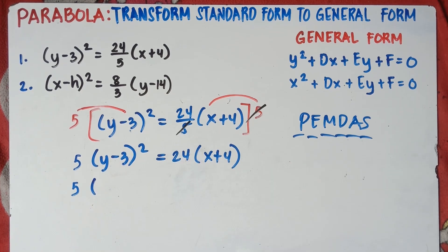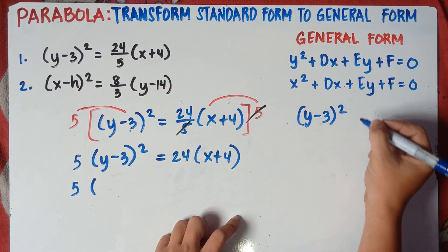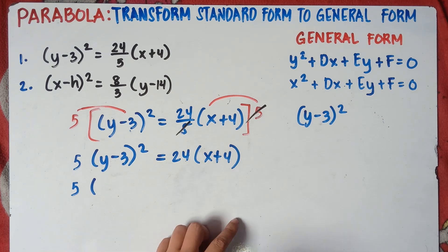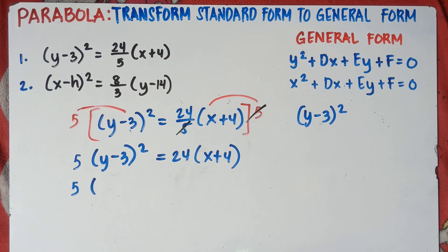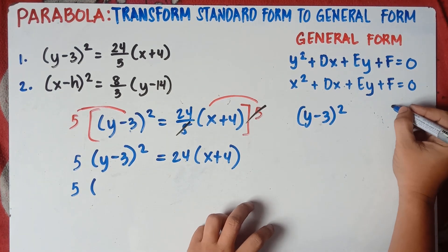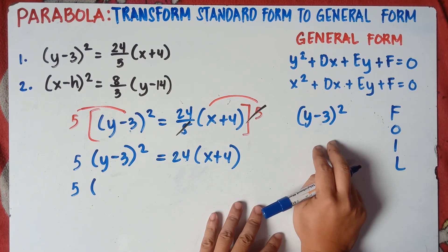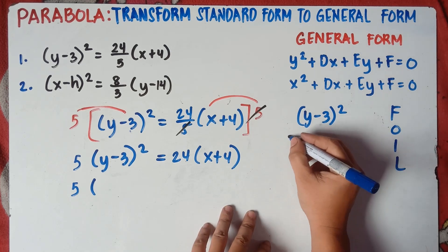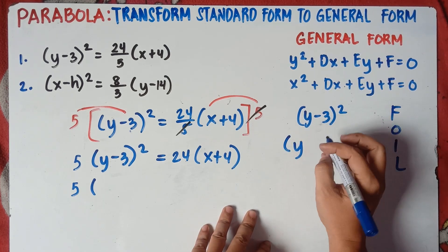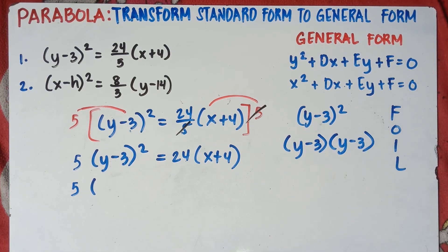So what would be the answer for (y minus 3) quantity squared? You have two options: you can do the FOIL method or the square of binomial. Let's do the FOIL method. Since (y minus 3) squared means you multiply the expression by itself: (y minus 3) times (y minus 3). Remember the FOIL method.